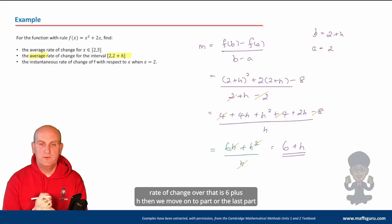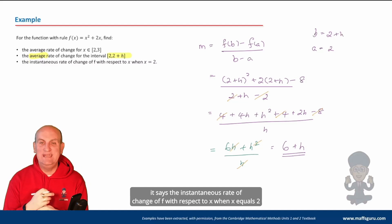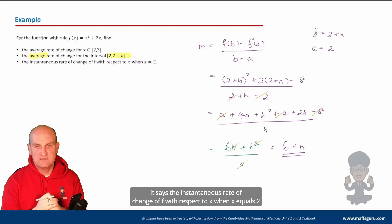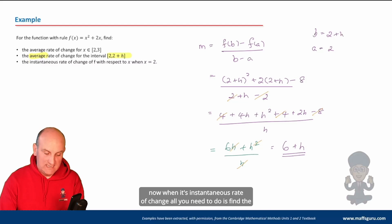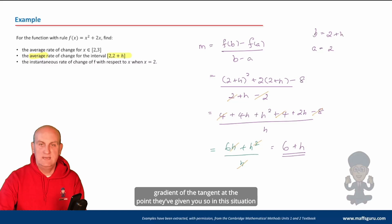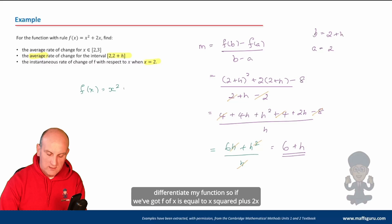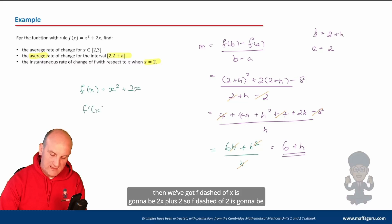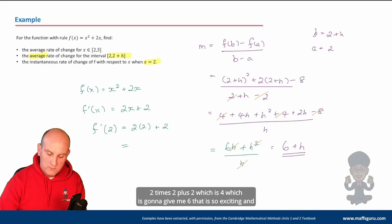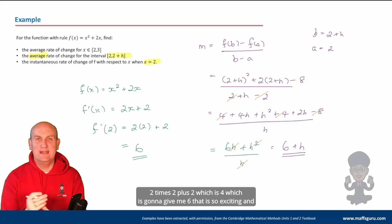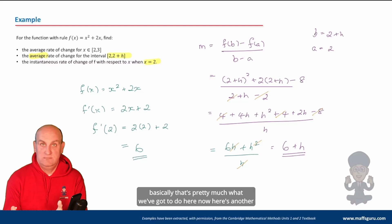Then the instantaneous rate of change of f with respect to x when x equals two. When it's an instantaneous rate of change, all you need to do is find the gradient of the tangent at the point given. So differentiate: f(x) equals x squared plus 2x gives f'(x) equals 2x plus 2. Then f'(2) equals two times two plus two, which equals four plus two, which gives me six.